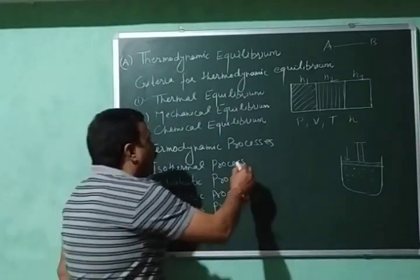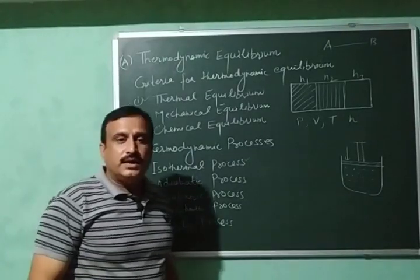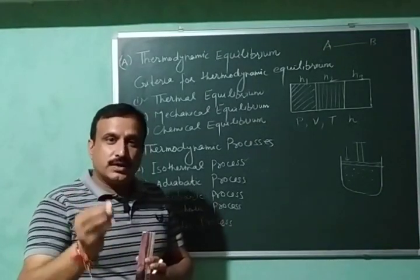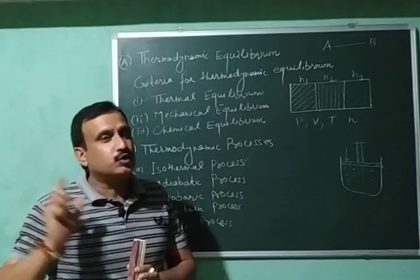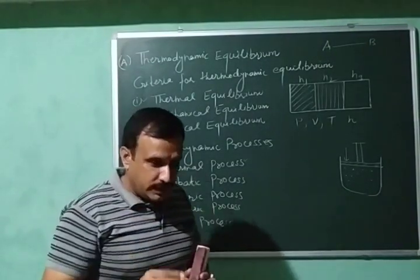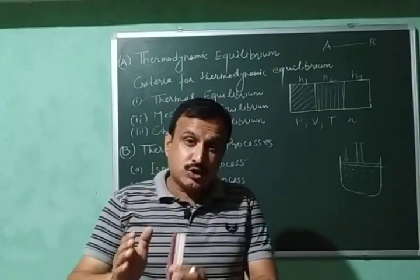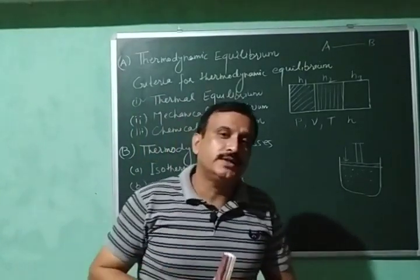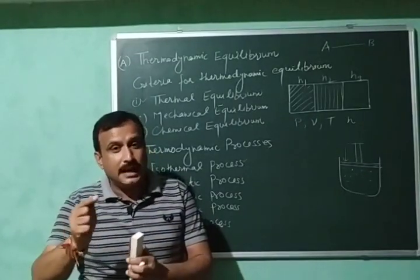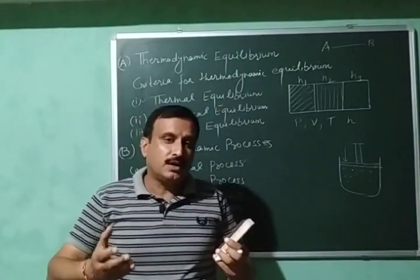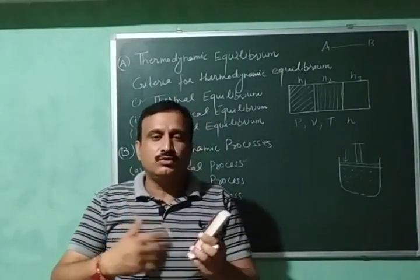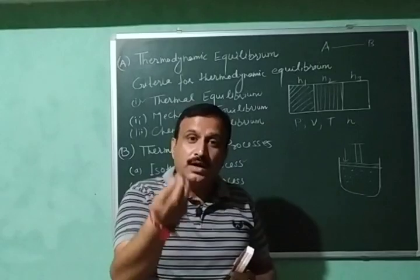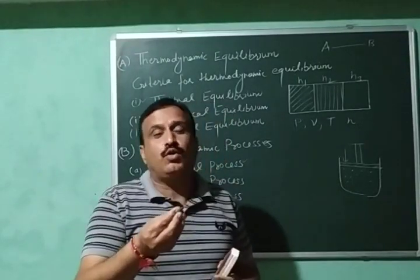The first process is the isothermal process. A process is said to be isothermal if the temperature remains constant throughout the process. The temperature has to be kept constant. In this process, heat will be exchanged between the system and surroundings. It might seem that if temperature is constant, no heat is exchanged — but that is not the case, because to maintain constant temperature, exchange of heat between system and surroundings is very much required.